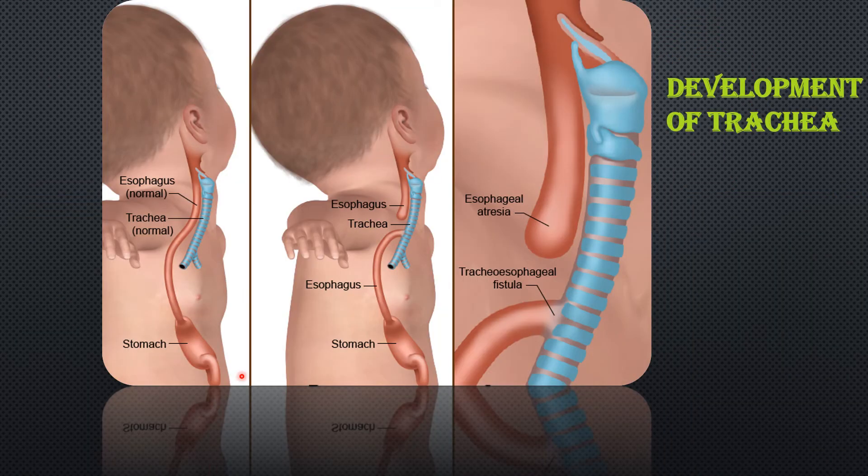While we read about the development of trachea, we must know the important birth defect conditions also. Here we can see a condition that is tracheoesophageal fistula. In case of normal child, a septum is formed so that the separation of the trachea and esophagus can be identified.